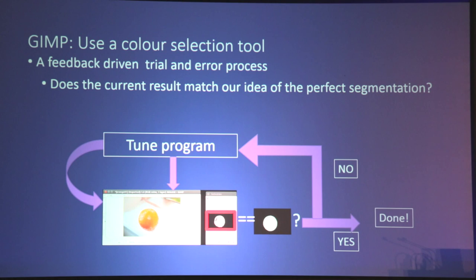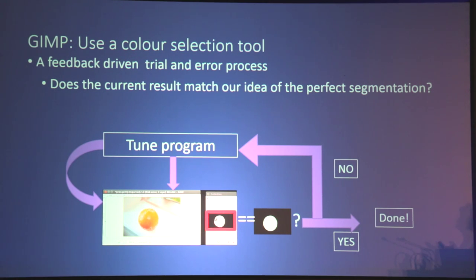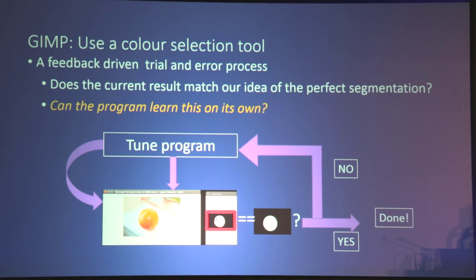Let's think about what we've just done. We used a program and kept tuning it until the result looks like the mental image of what we think perfect detection would be. Detection is basically an image of the same size as the original that is white where there is an orange and black where there is no orange. You keep tuning until you're happy. But the direction we want to move in is: rather than tuning the program, can the program tune itself? Can it teach itself to do this?